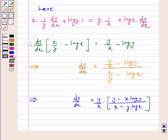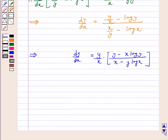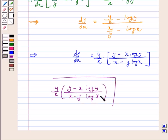So we have found dy/dx and our answer is: dy/dx equals y/x times (y minus x log y) upon (x minus y log x). I hope the question is clear to you.